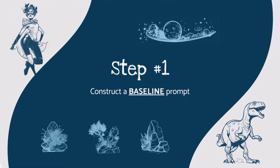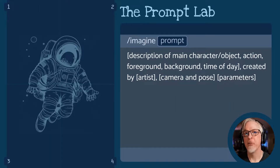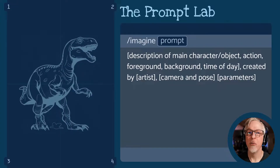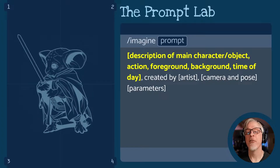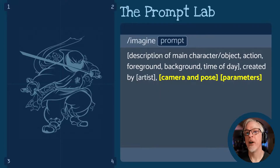The first step in building our powerful, flexible, and highly reusable Midjourney prompt is starting from a solid baseline. Here in the prompt lab, we're emulating the Discord interface with a slightly more visual style to make it easier to follow along. All the images you see today were created in Midjourney via Discord, with no retouching in Photoshop or any other application. Think of it as a three-sentence paragraph: the first phrase is a description of our main character or object, the action being performed, the foreground, the background, and the time of day. Onto that, we layer the artist — in this case, Mary Blair. And the final step is defining the camera and pose and any further parameters.